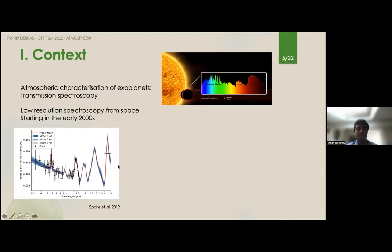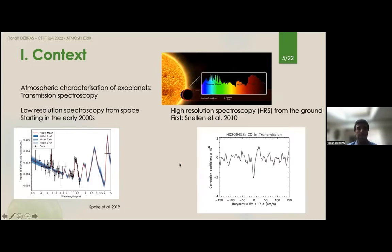From space it started in the early 2000s and you have an example here from Sing et al. 2019 where you see that the radius of the planet is wavelength dependent. You see here the radius slope and then you have some strong bands of absorption which are due to different elements, so here it's potassium and water for example.